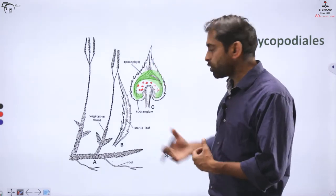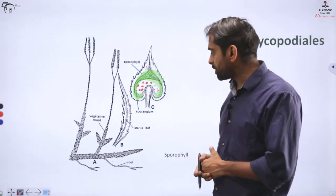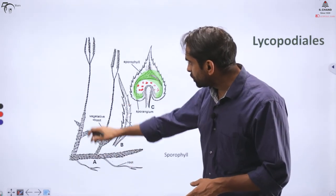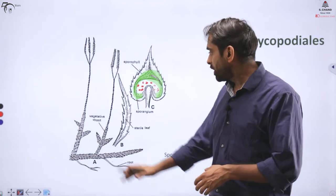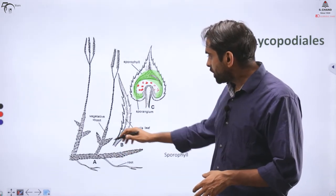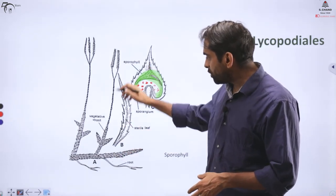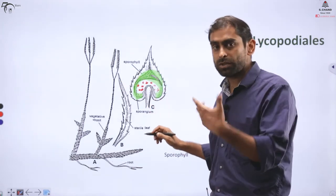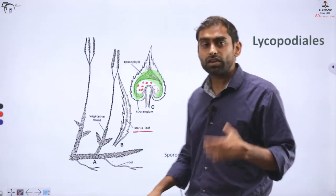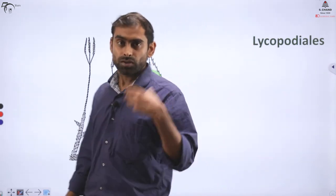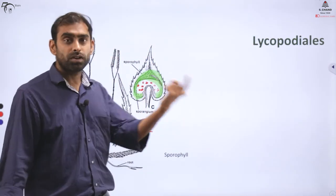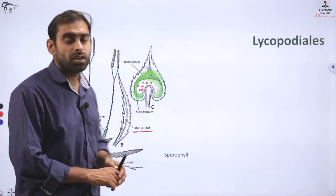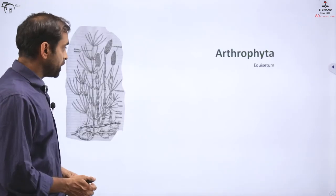Spore formation in lycophytes is similar to most other pteridophytes. You can see the number of roots and leaves and rhizoids in the plant. When the leaf matures, spores develop within it. Leaves that bear spores are called fertile leaves, while leaves that do not bear spores are called sterile leaves. This was the second division of pteridophytes.